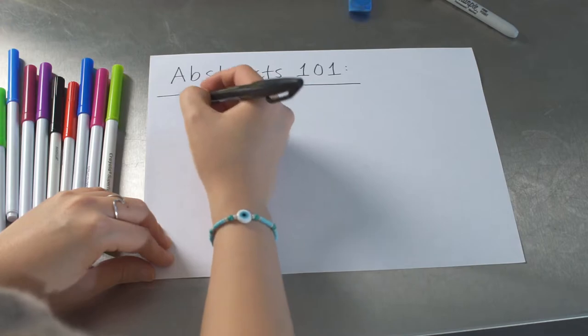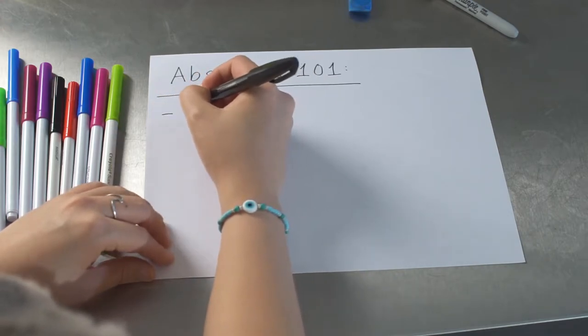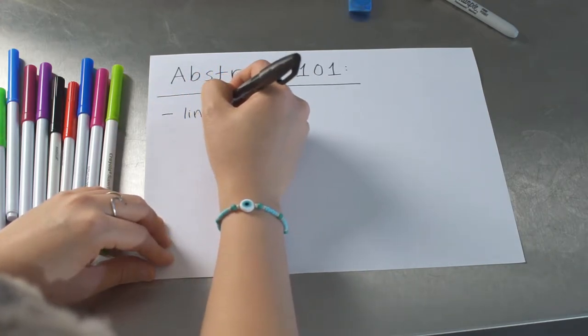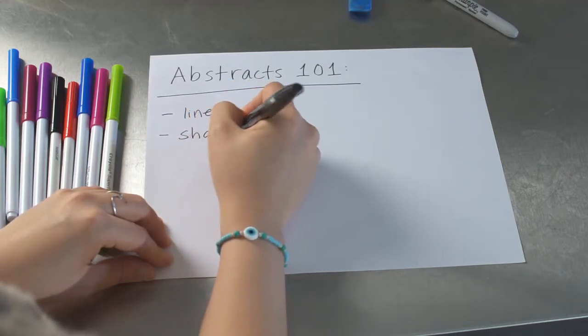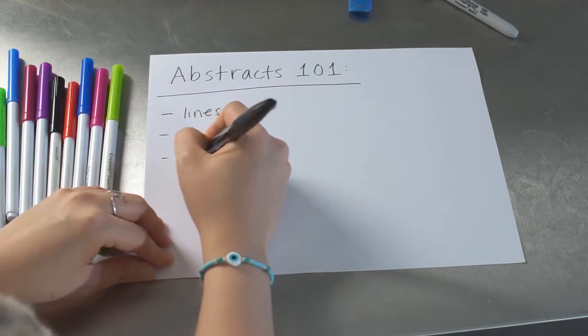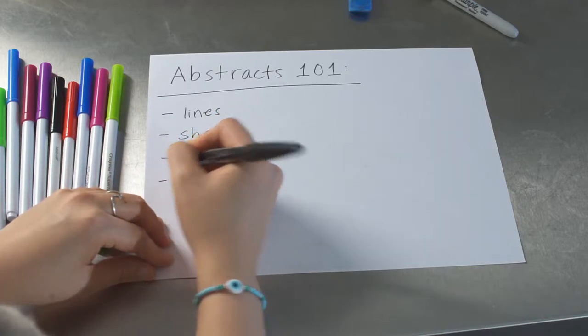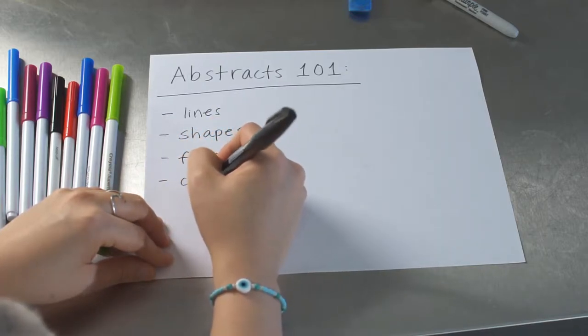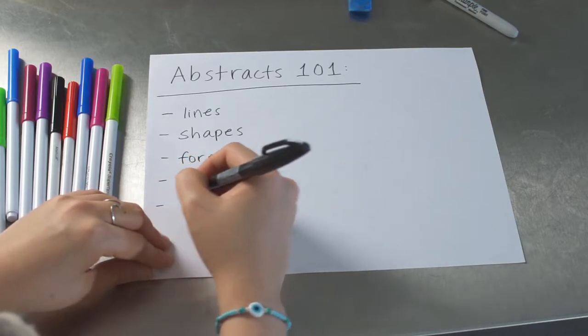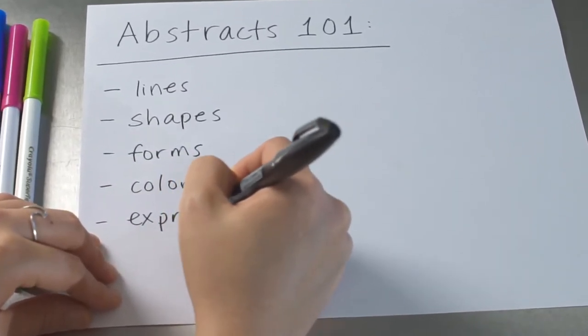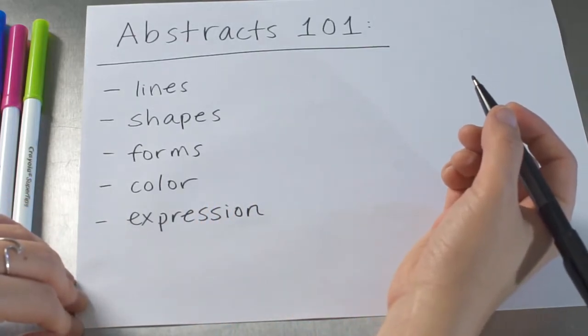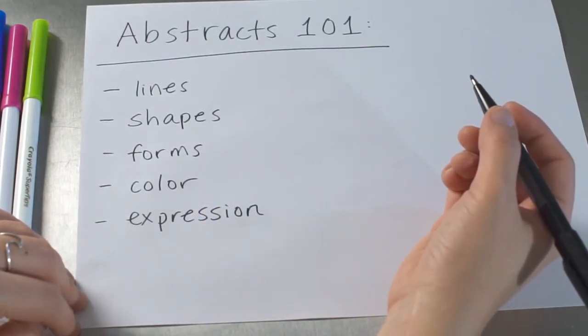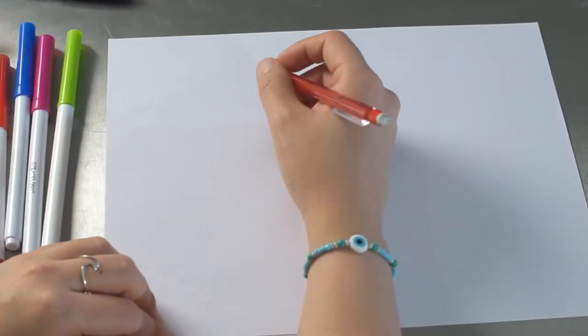When we create abstract drawings we often want to think about different types of lines, shapes, forms, color, and expression. How can we use these things in different ways to create an interesting drawing that evokes our feelings or emotions?